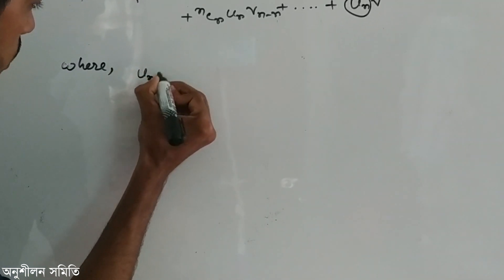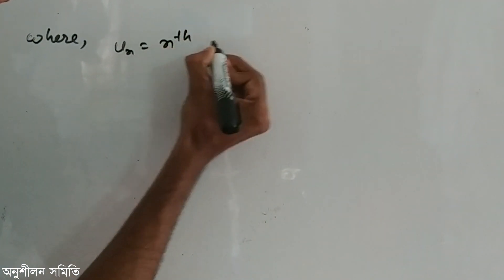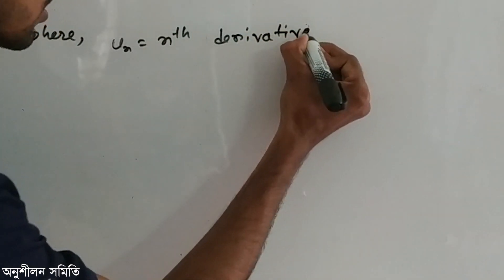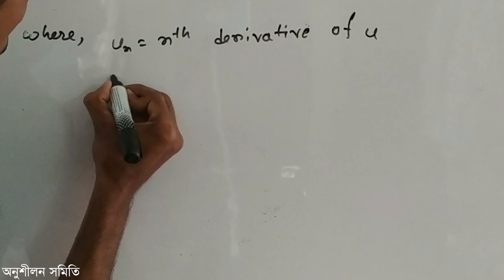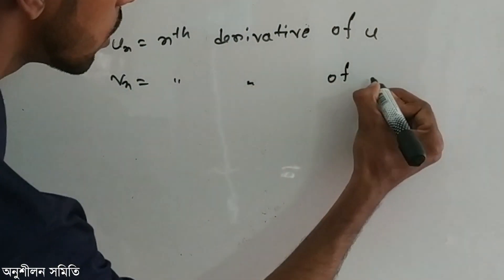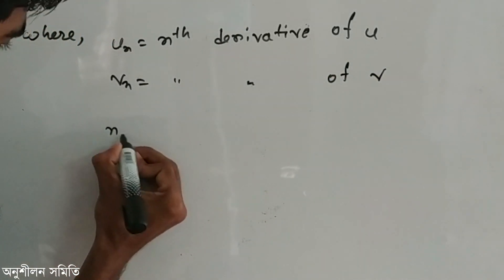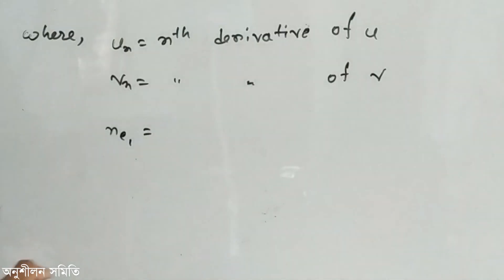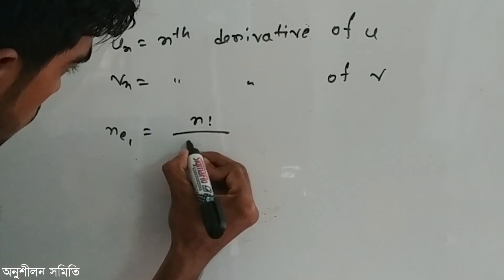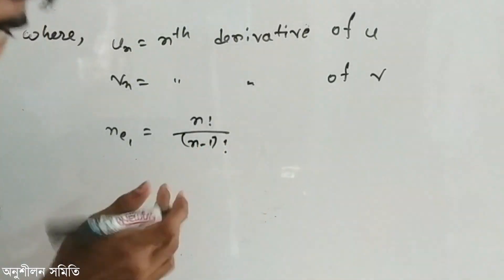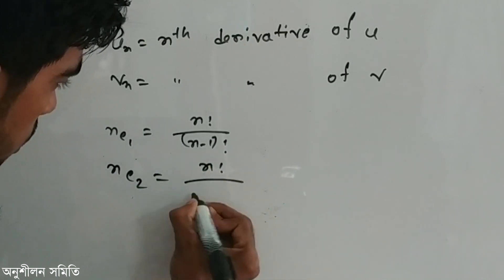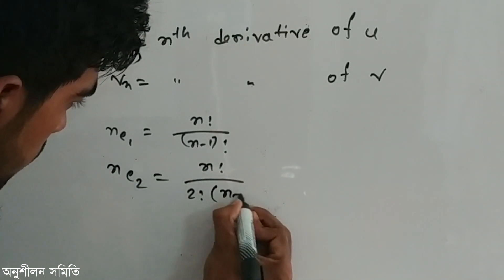u_n equals the nth derivative of u, v_n equals the nth derivative of v. nC1 — at this intermediate level combination — equals n factorial divided by (n minus 1) factorial. nC2 equals n factorial divided by 2 factorial into (n minus 2) factorial.